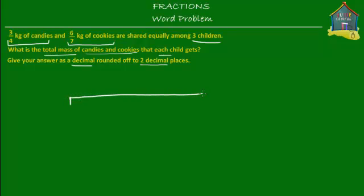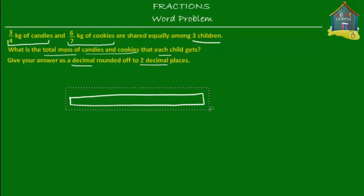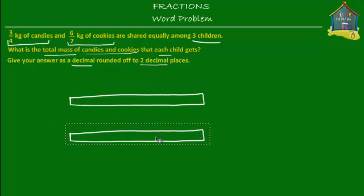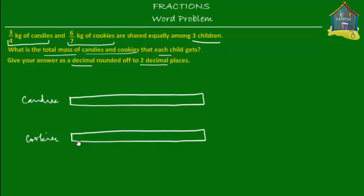Let's suppose that this is a model for one kilogram — one kilogram of anything. Since we're going to need to mark candies as well as cookies, how about we copy this kilogram and paste it here. So we have two kg models, one for candies and one for cookies. We don't have a whole kilogram — we have only three-fourths and six-sevenths of candies and cookies respectively.